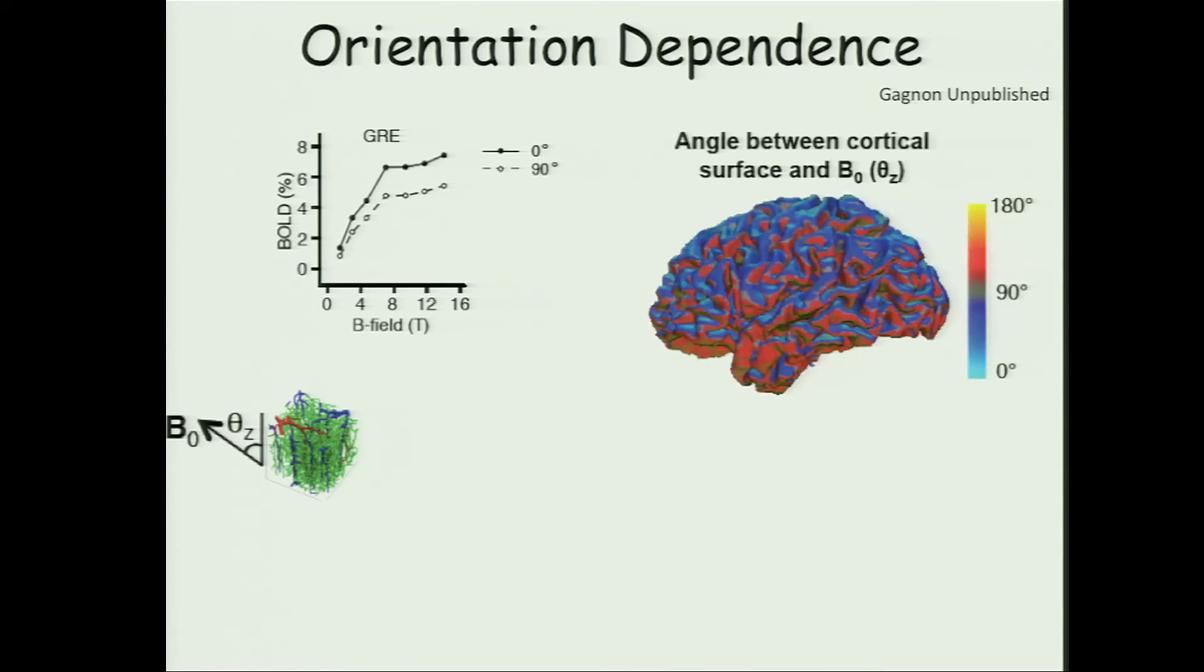So we thought we should be able to measure that in humans. You can measure the human brain anatomy quite nicely with MRI, and you can calculate the angle of the surface of the brain with respect to the magnetic field. Then we presented a physiological challenge to the subject, hypercapnia, to decrease deoxyhemoglobin content uniformly over the brain.